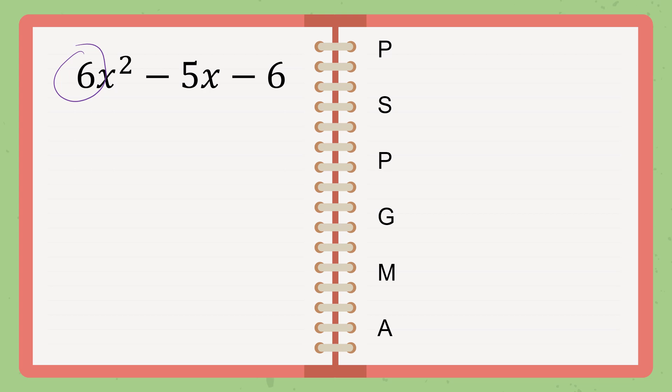So, P. We know that P is product. Okay? So, we will just multiply 6 and negative 6. So, 6 multiplied by negative 6. The answer is negative 36. Okay? Then, we will just copy the middle. And that is negative 5.